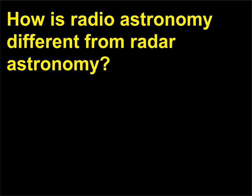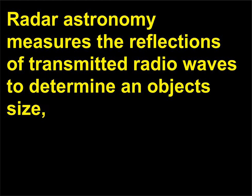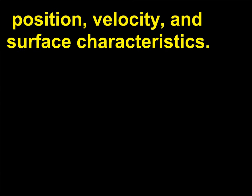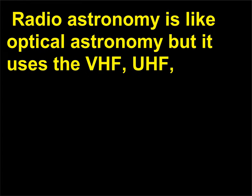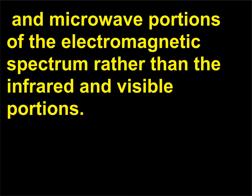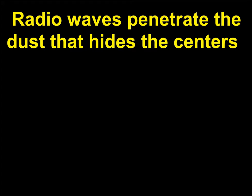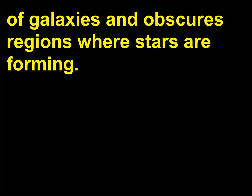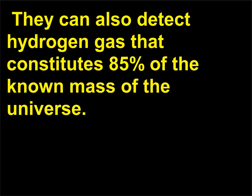How is radio astronomy different from radar astronomy? Radar astronomy measures the reflections of transmitted radio waves to determine an object's size, position, velocity, and surface characteristics. Radio astronomy is like optical astronomy but uses the VHF, UHF, and microwave portions of the electromagnetic spectrum rather than the infrared and visible portions. Radio waves penetrate the dust that hides the centers of galaxies and obscures regions where stars are forming. They can also detect hydrogen gas that constitutes 85% of the known mass of the universe.